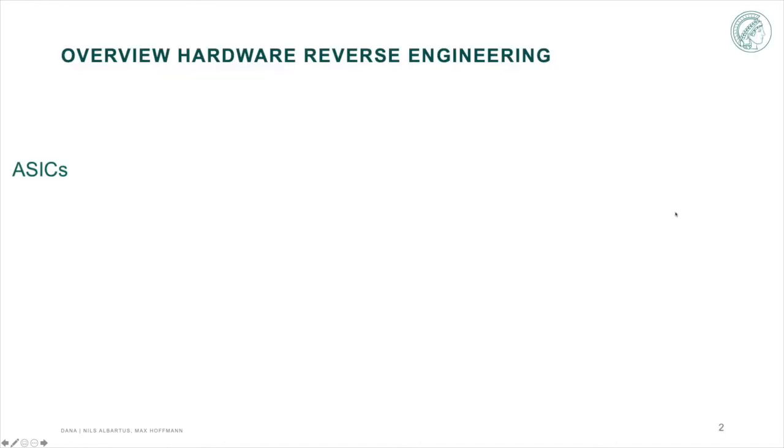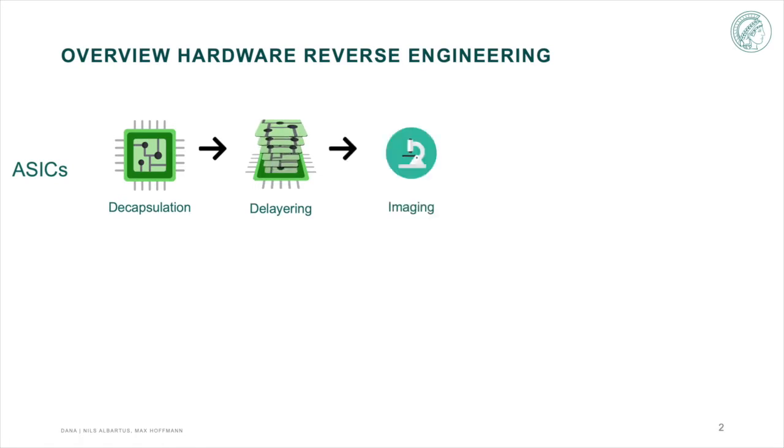So let's get started. We are going to start with an overview of the hardware reverse engineering process in general and how to actually retrieve a netlist. Starting with an ASIC, we first have to decapsulate the chip, meaning removing the epoxy. Once we have the die, we can start the delayering and take an image of each layer and process these images by stitching them together and stacking all images.